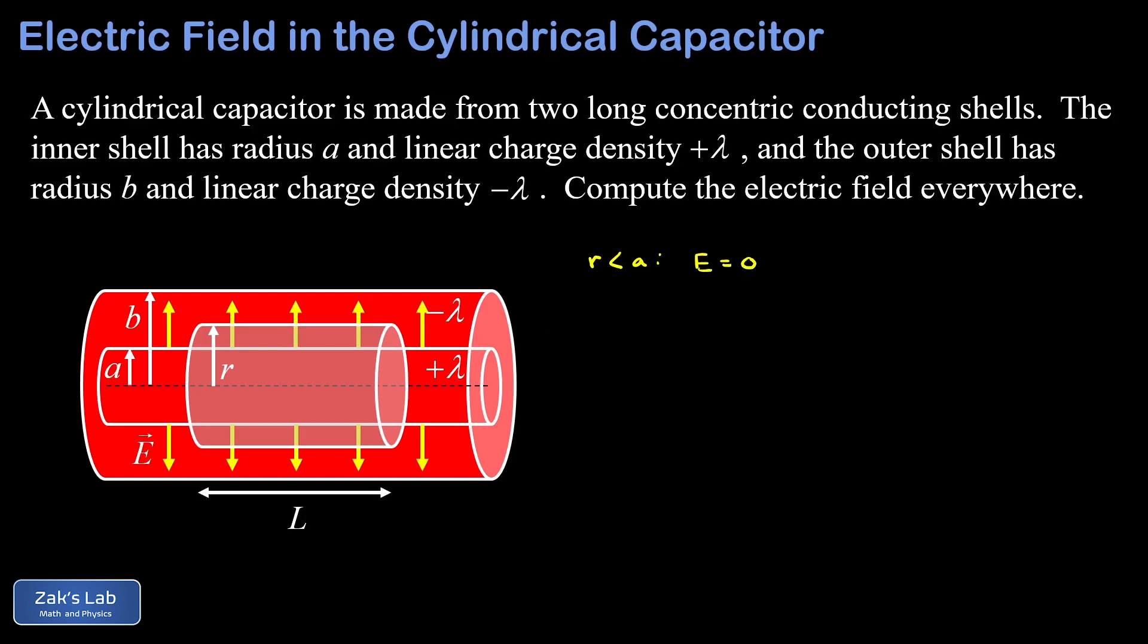If we chose a Gaussian surface outside the radius b, that would also not contain any charge, so when r is greater than b we would get E is equal to zero again. That's because it would have equal parts positive and negative charge inside of it, so those would cancel out giving us a net zero charge inside that Gaussian surface.